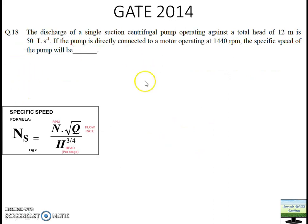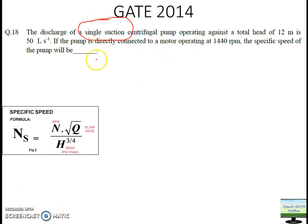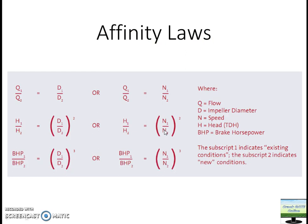The 2014 question is also the same type. Here it is given as a single stage, so no need to change anything — directly put the values in your formula and you will get the answer. I think the specific speed concept is now clear.